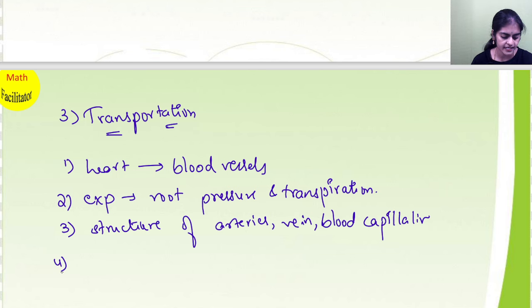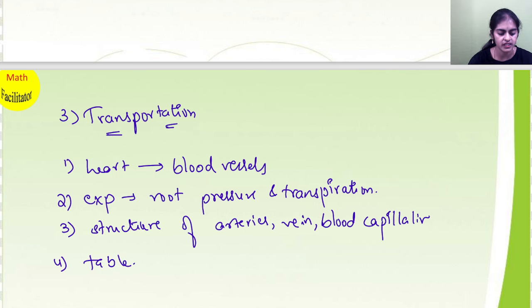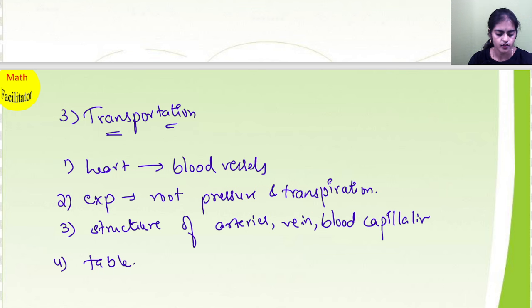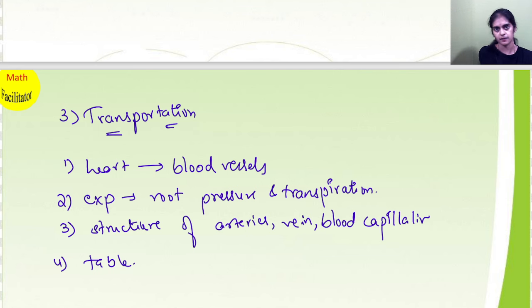And then the table — whatever table you have in your textbook — basically the difference between arteries, veins, and blood capillaries, and what are their roles and functions.